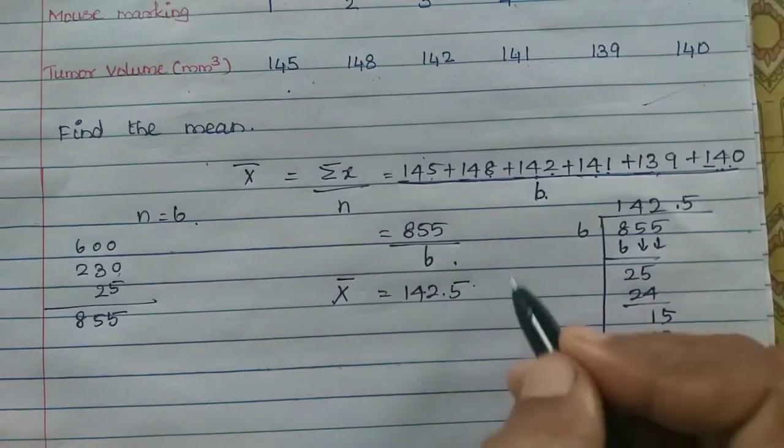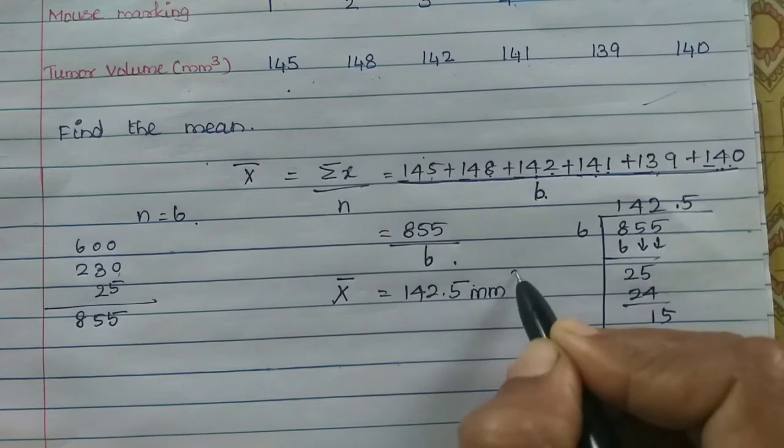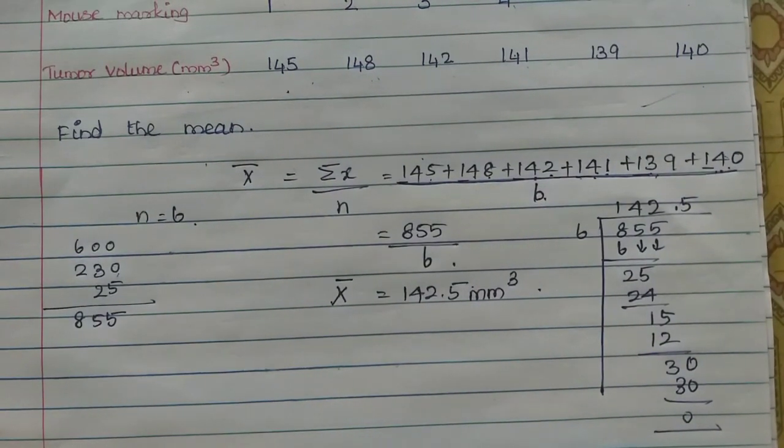So we call it millimeter cube. The mean of the tumor is 142.5 millimeter cube. That's all. Thank you.